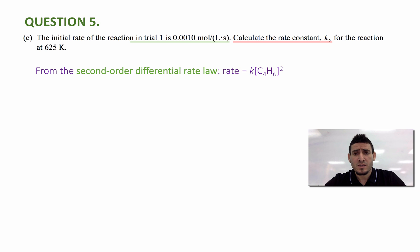Now from the differential rate law, I can say that rate is equal to the rate constant k multiplied by the squared concentration of C4H6, since it's a second order.